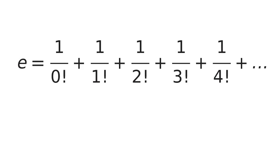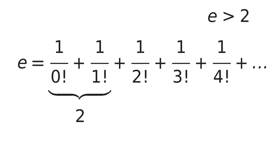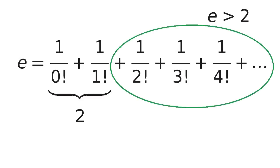Begin with this infinite sum for e. The first two terms together add to 2, so e must be greater than 2. But what can we say about the remaining sum?